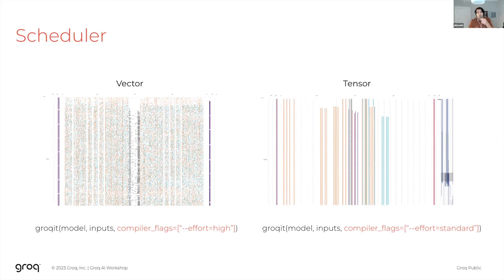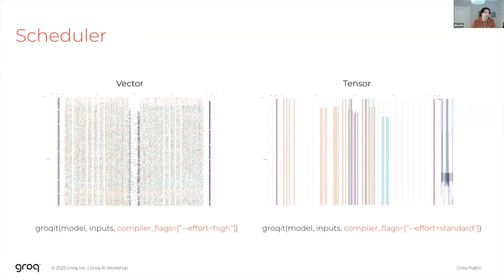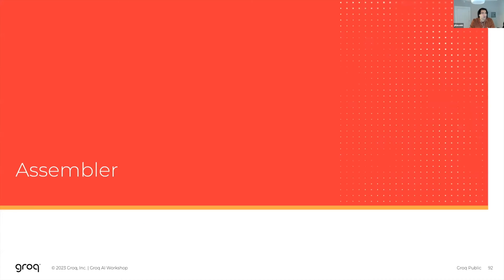We can add an argument to the Grok Flow compile call to choose between vector and tensor scheduling. The effort-high flag enables vector scheduling and the effort-standard flag enables tensor scheduling.